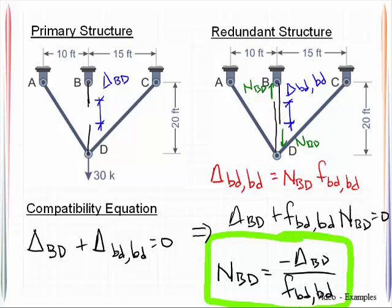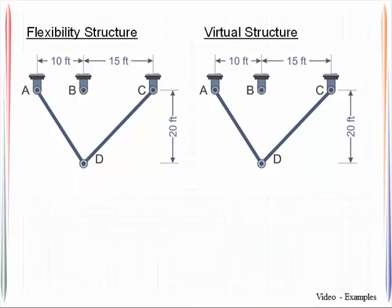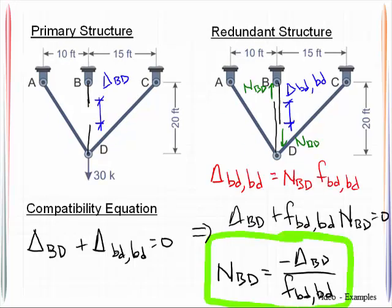So the next thing is, I've got to then compute what those two displacements are. And in order to facilitate that, I'm going to use virtual work, which will require me to have a virtual structure. So here's my virtual structure where I'm simply going to place a unit virtual load into place where I had made the cut before. So whenever we are dealing with the virtual structure, we will label all the bar forces with a lowercase n.